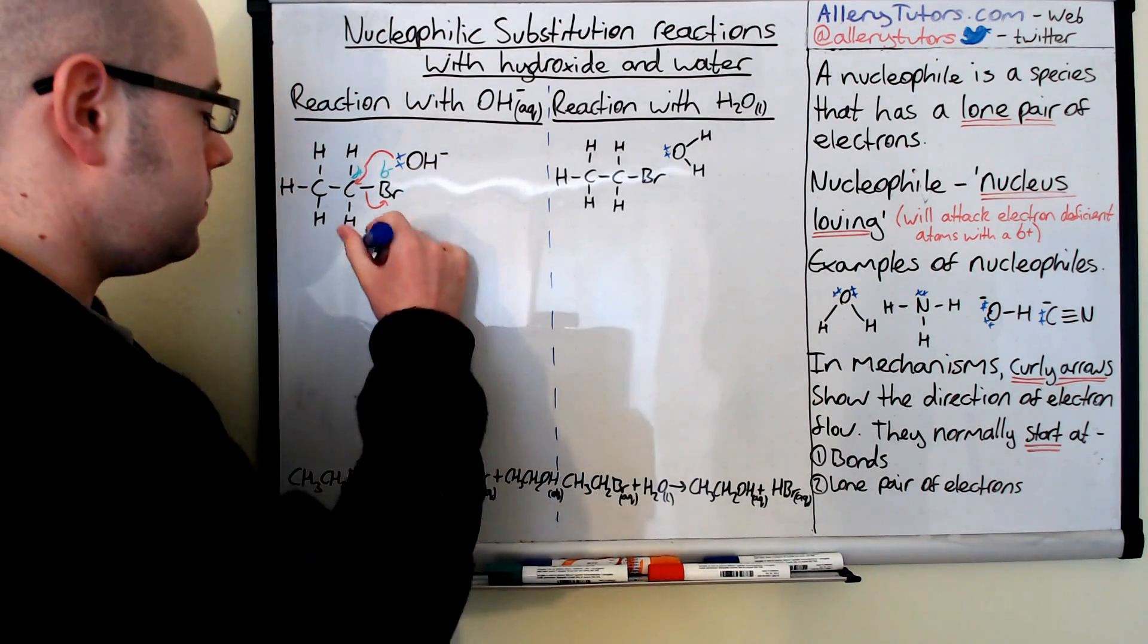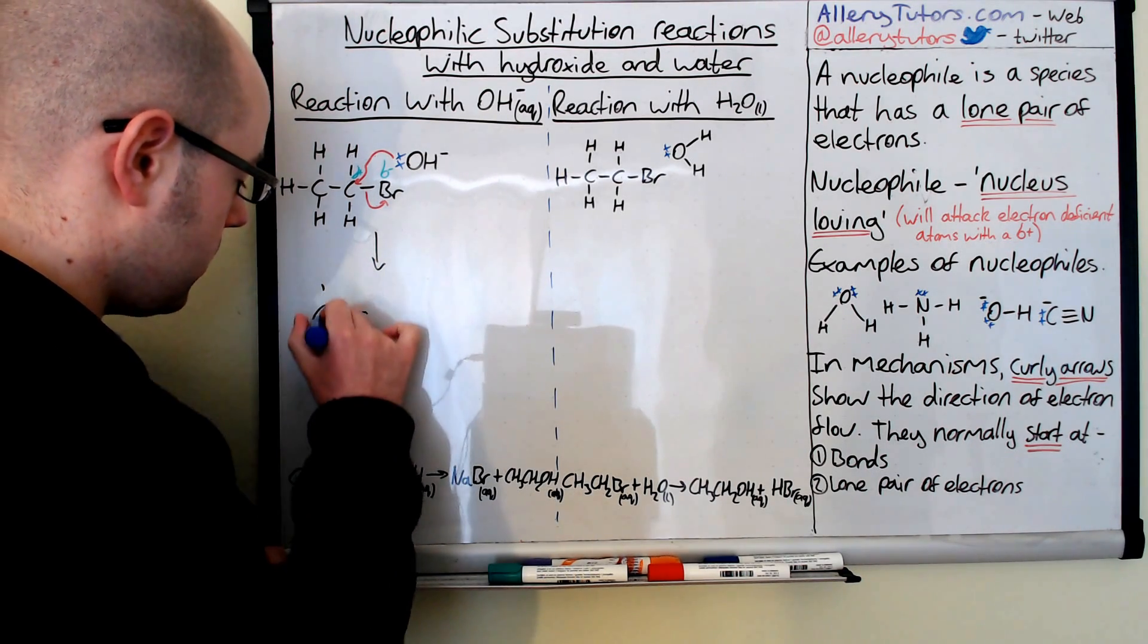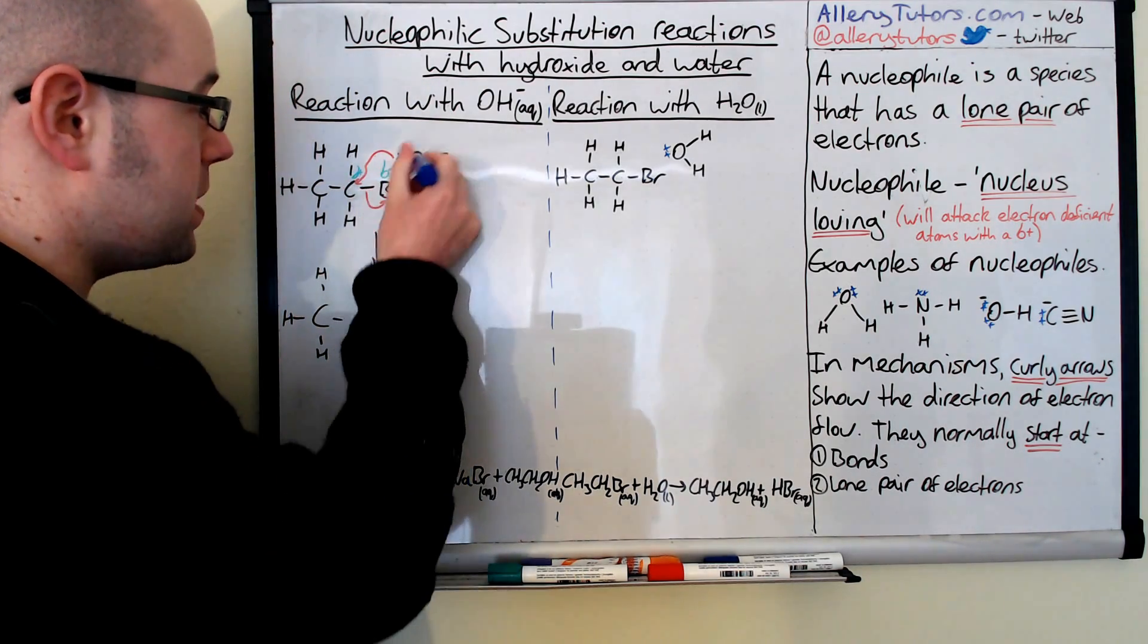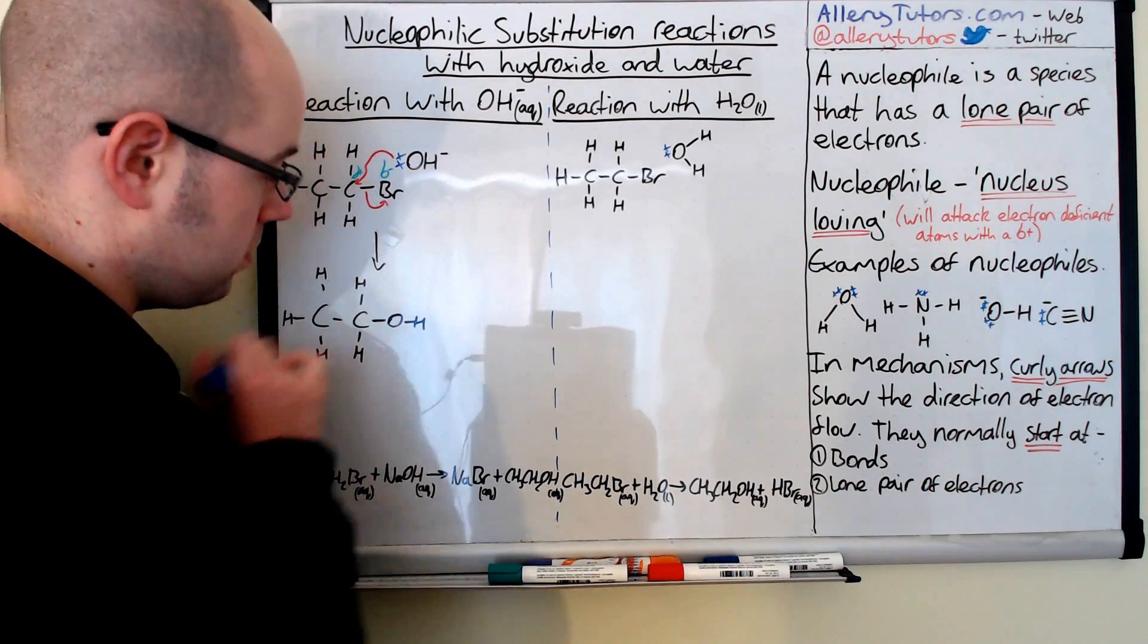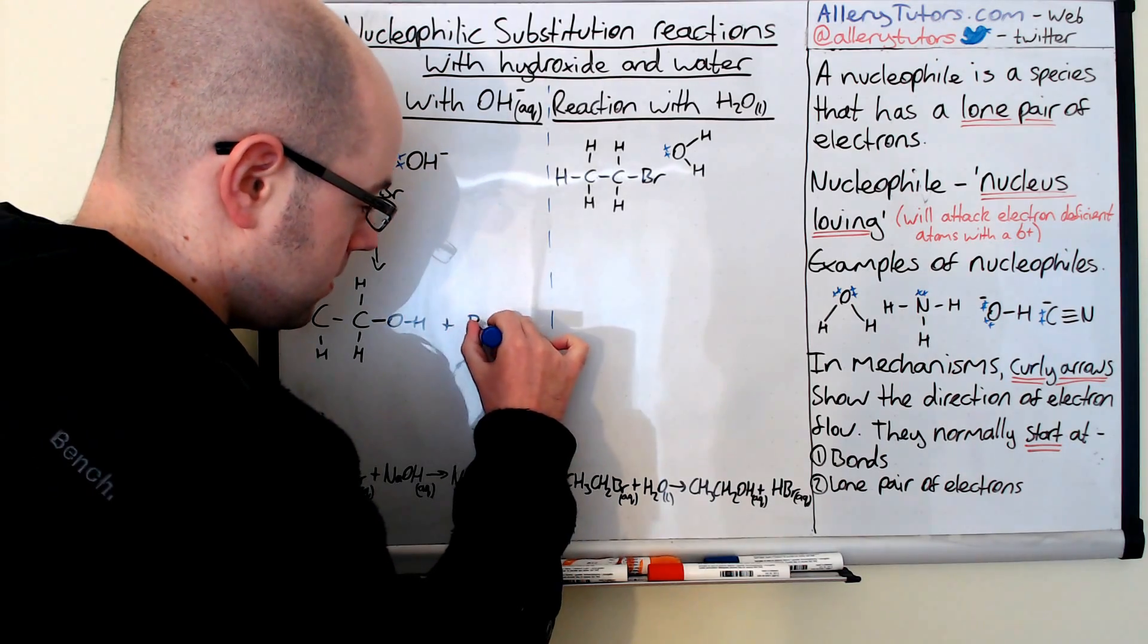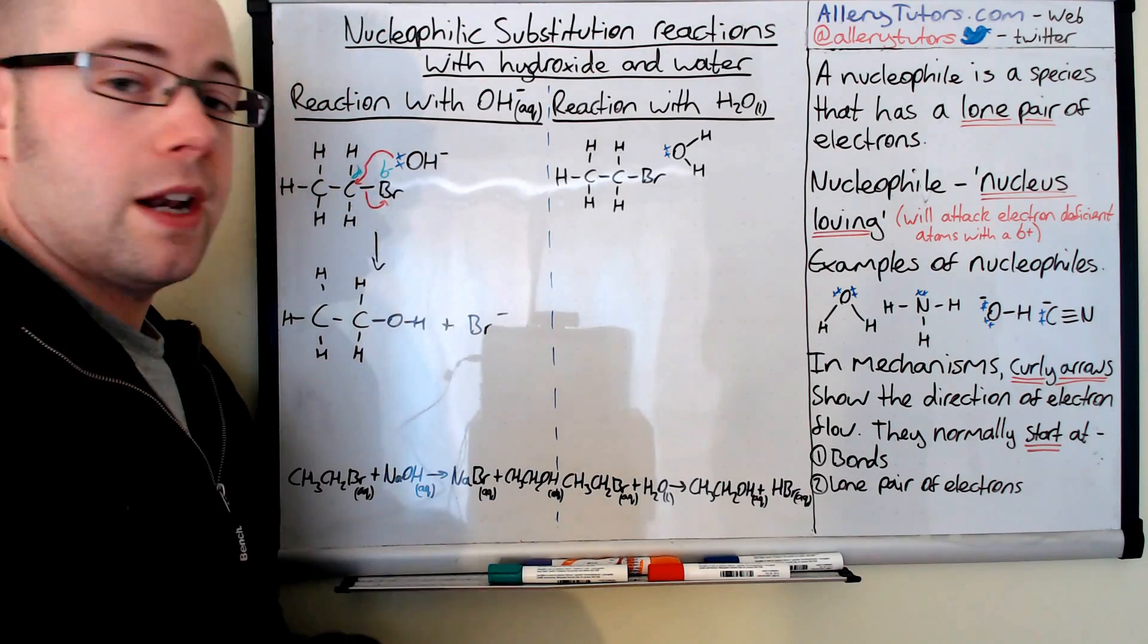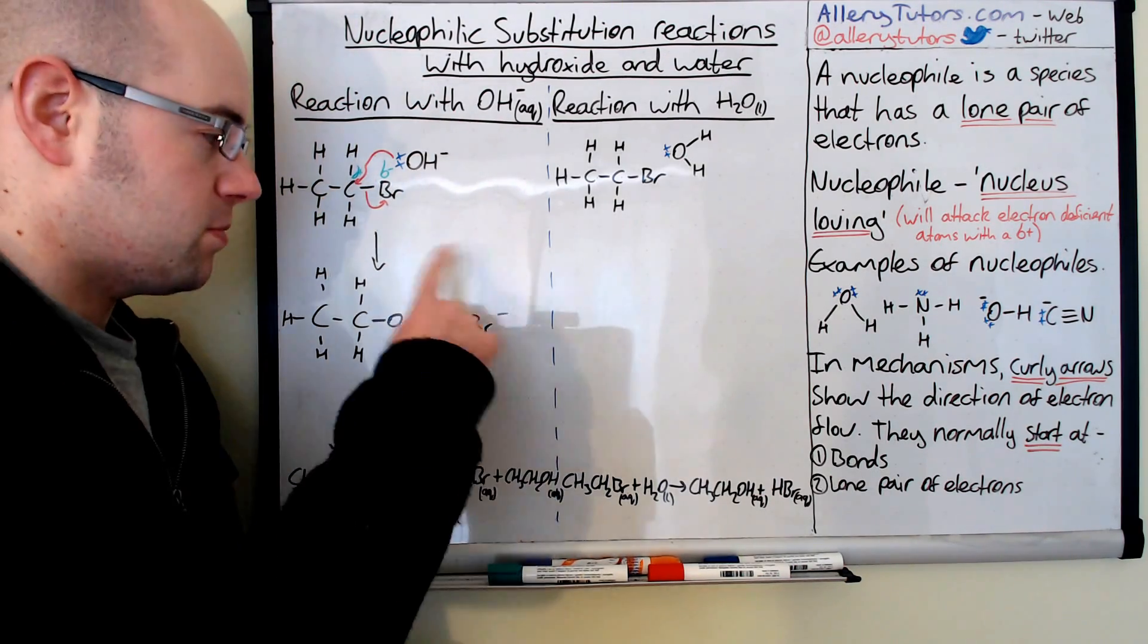Then we're going to draw products. So we're going to show what we form. We have our two carbons, because this bit's unchanged. The bromine is being kicked off, but the OH is now part of this molecule there. The reason why it's got a minus charge is because it's just picked up an electron from the bond going into the bromine. That's why it's got a negative charge.